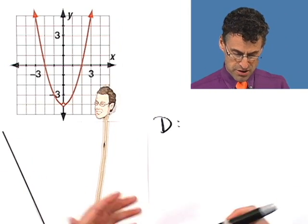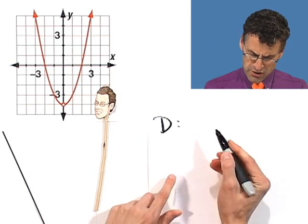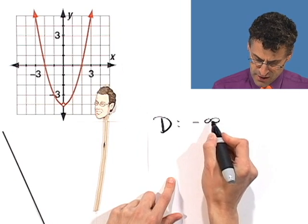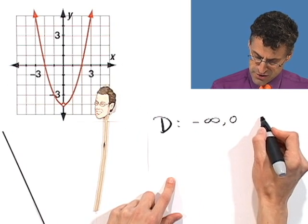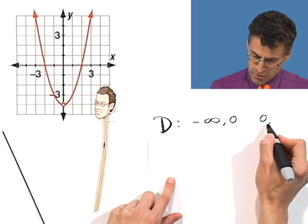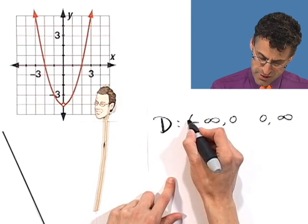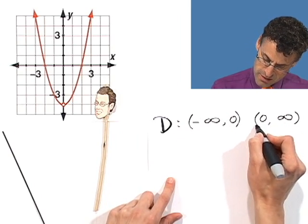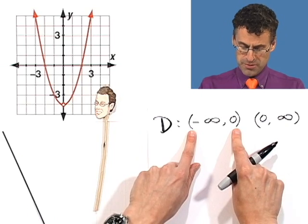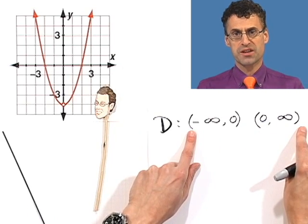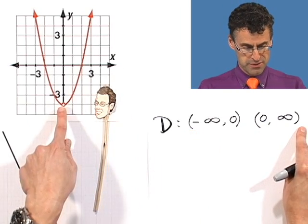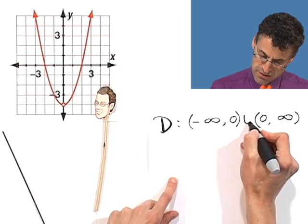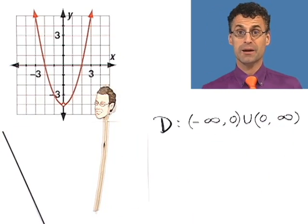There's a hole right at zero, so it's all values that are not zero. The way you'd write that is: you can go from negative infinity all the way up to zero, and from zero all the way to infinity, but you can't include zero. This means all negative numbers and all positive numbers, but not zero. You take the union and say that's the domain: (-∞, 0) ∪ (0, ∞).